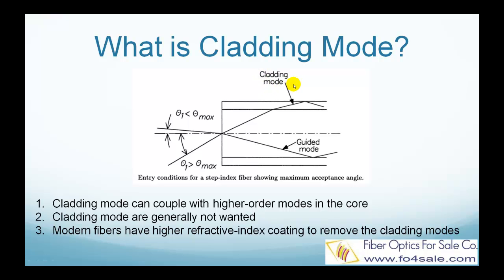They are also called radiation modes. If the fiber is a multimode fiber, then cladding modes can couple with and get power from higher order modes of the core, resulting in increased loss of the core power. That is why cladding modes are generally not wanted.